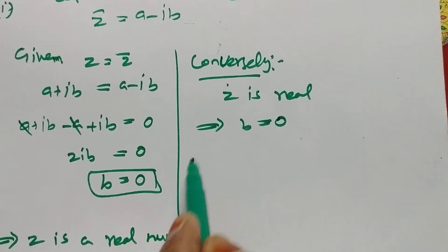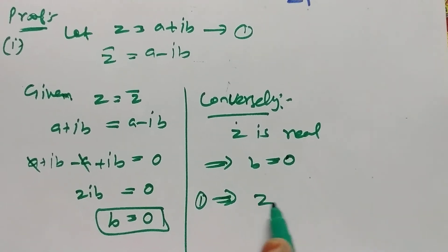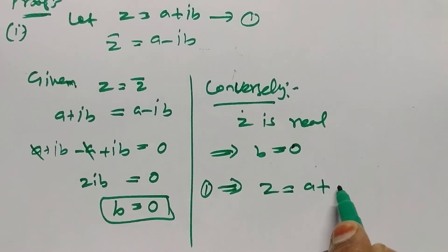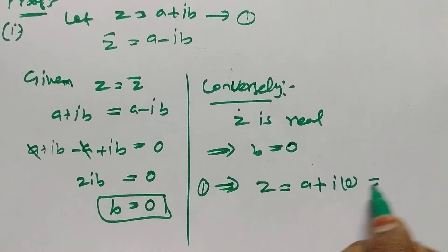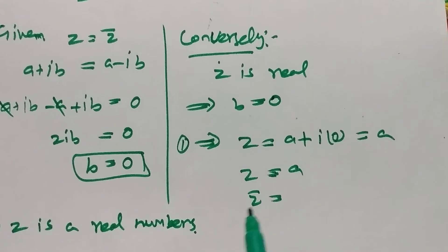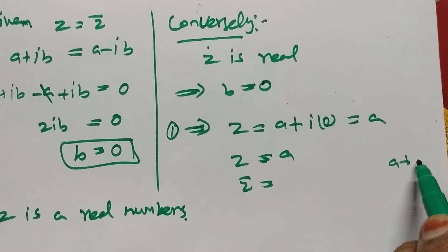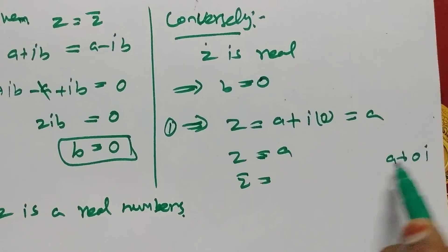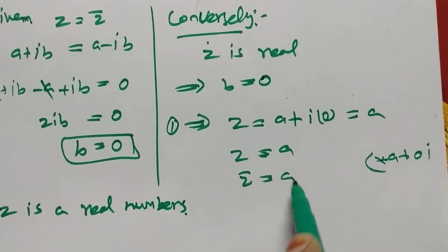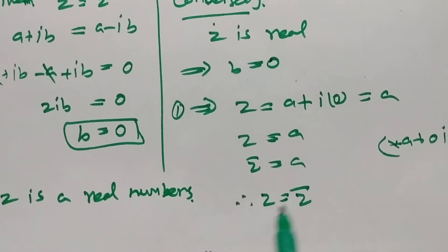So applying this, z is equal to a plus ib. Then z equals a plus i times 0, so z equals a. Then z-bar equals a minus 0i, that is a. So therefore z equals z-bar.